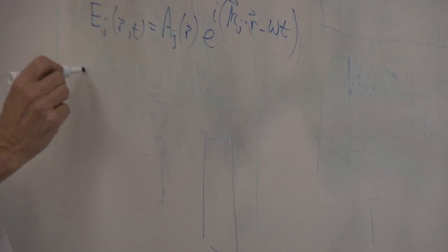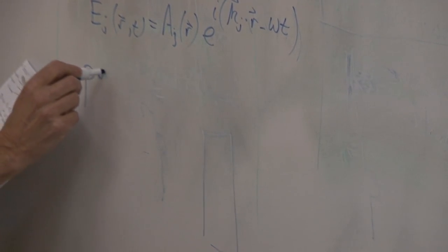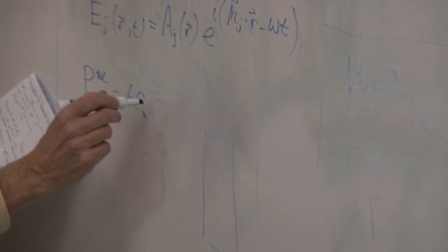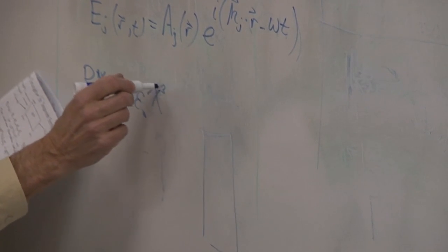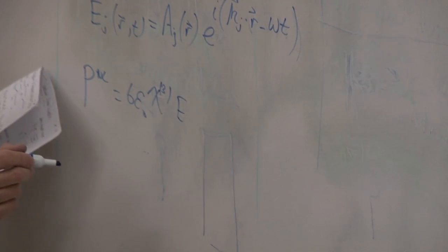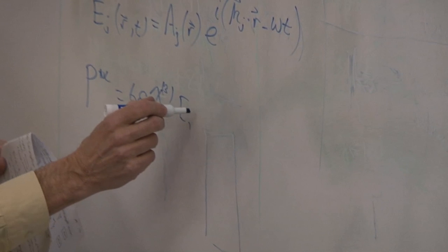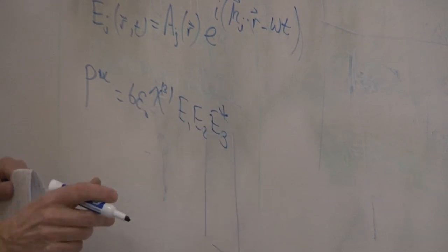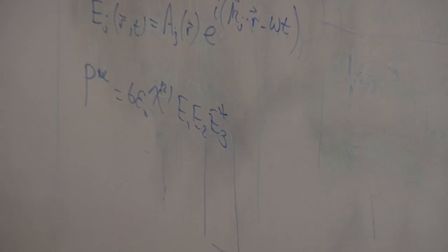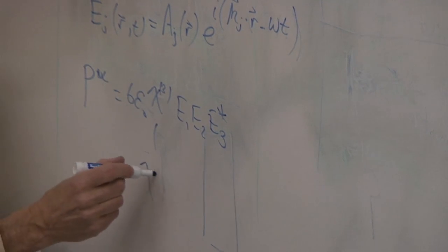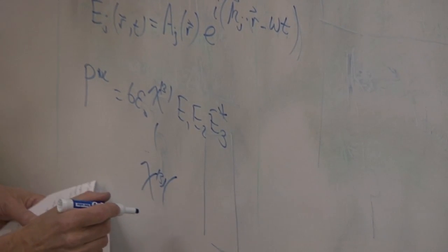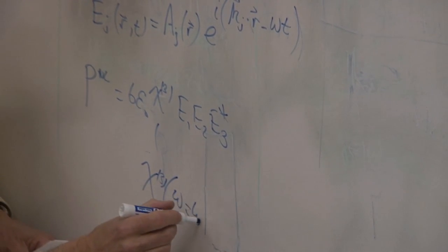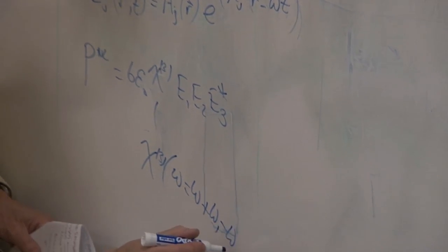We now ask: what is the nonlinear polarization? This will be 6ε₀ · χ³ · E1 · E2 · E3*, where χ³ means χ³(ω = ω + ω − ω).